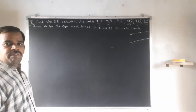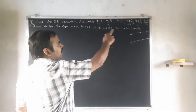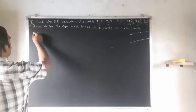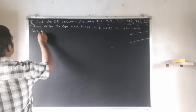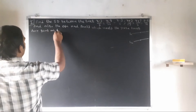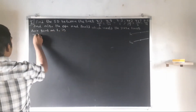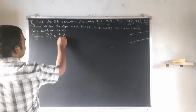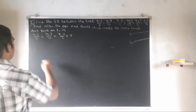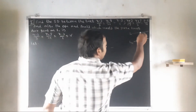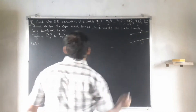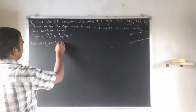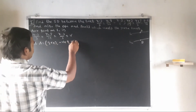For Method 1, we have L1 and L2 as line equations. Any point on L1: (x - 3)/3 = (y - 8)/(-1) = (z - 3)/1 = R. Let A = (3R + 3, -R + 8, R + 3).